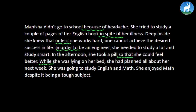And it makes a complex sentence. She had planned all about next week. She was going to study English and math — we do not have any conjunction in this sentence. Let's look at the last sentence: she enjoyed math 'despite' it being a tough subject. So how many conjunctions are there altogether? We have 'because', 'in spite of', 'unless', 'in order to', 'so that', 'while', and 'despite' — that is eight conjunctions altogether.